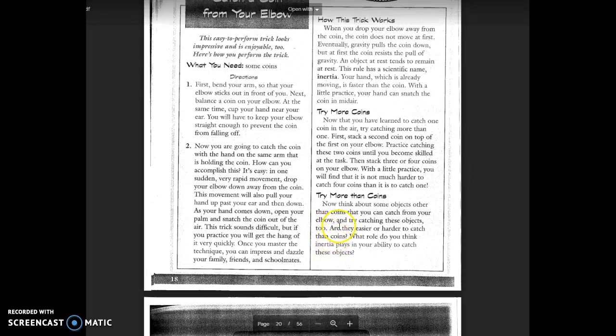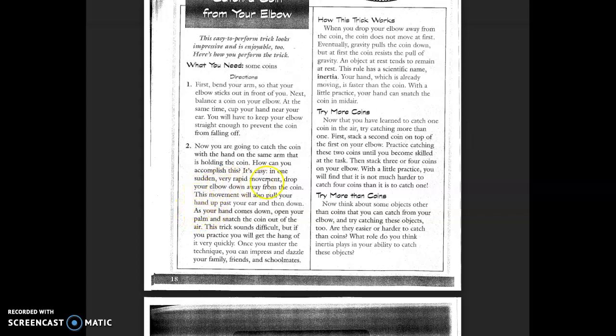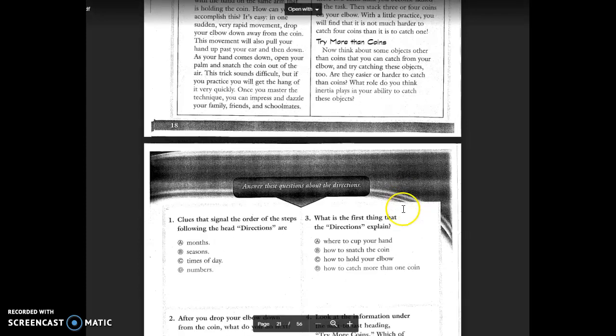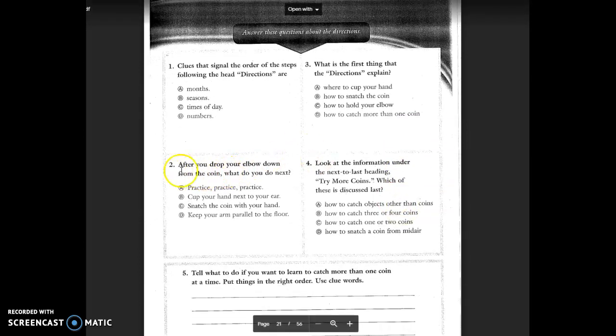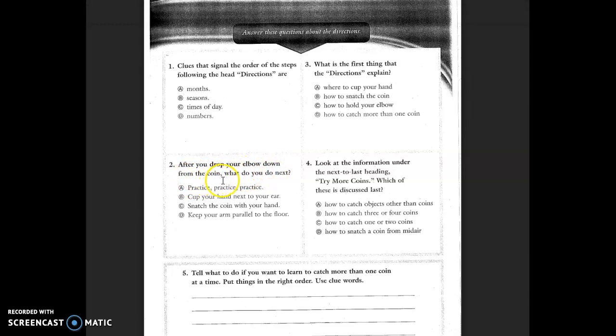All right, we're supposed to drop it down. So, oh, and then one, sudden, very rapid movement. Drop your elbow down away from the coin. Then it tells you about the movement. As your hand comes down, open your palm and smash the coin out of the air. So, figure out which one you do after you drop your elbow down from the coin.